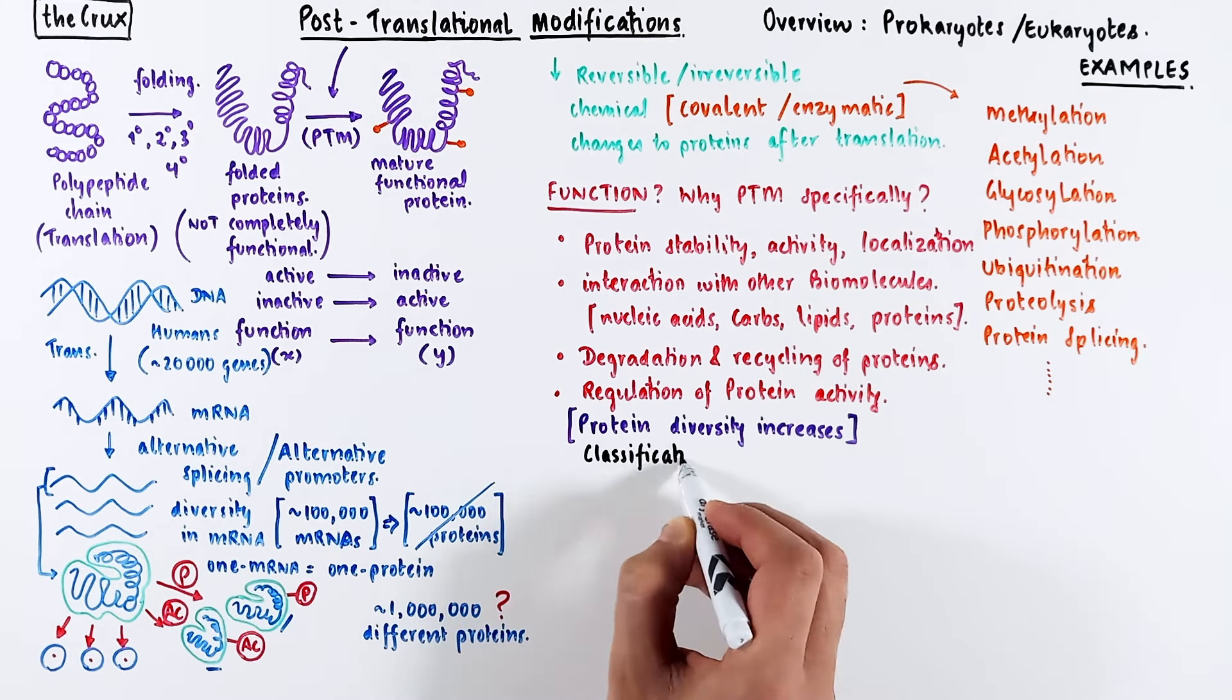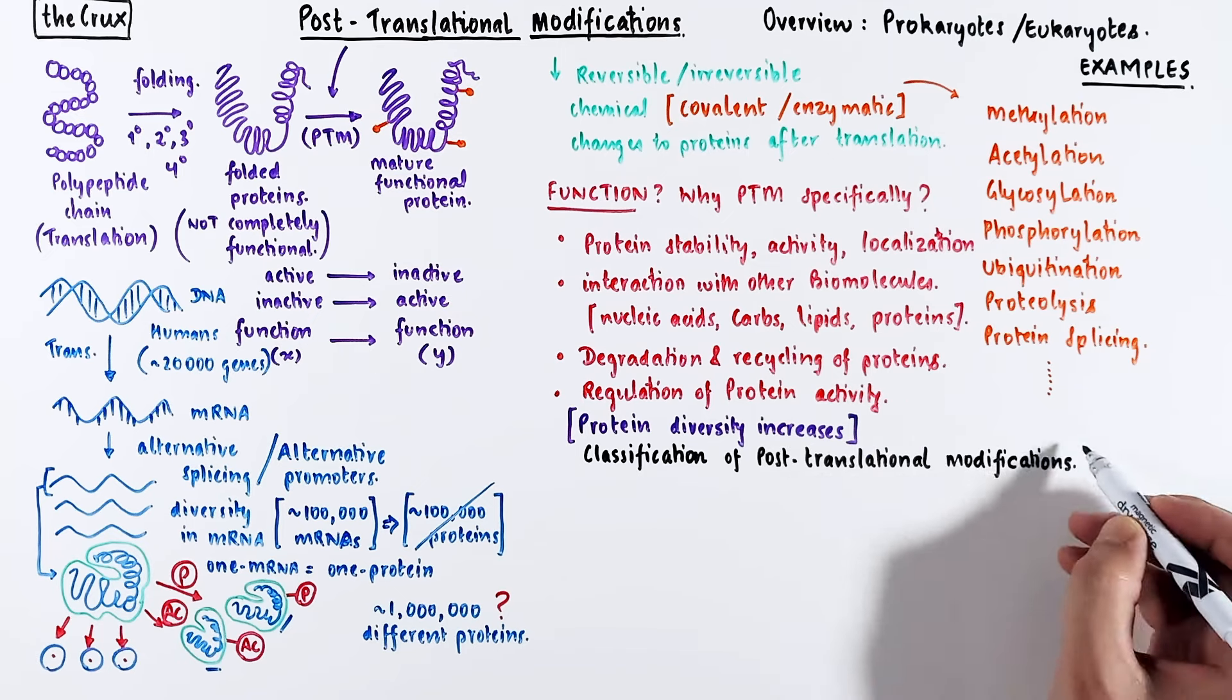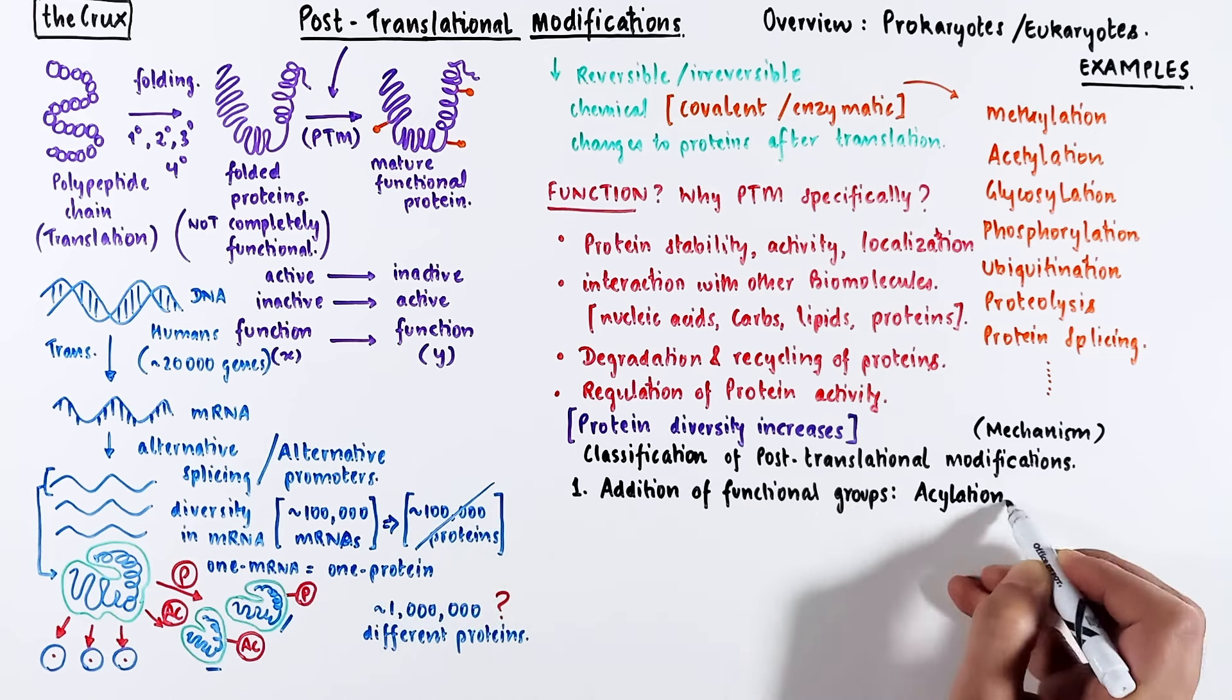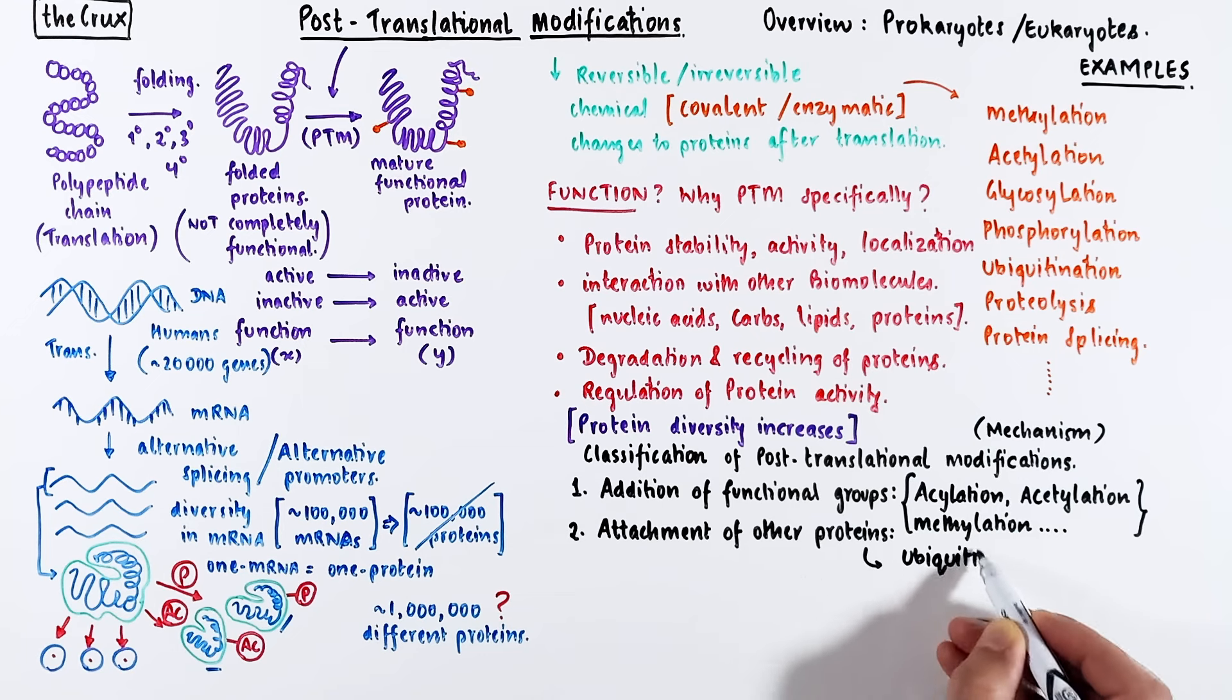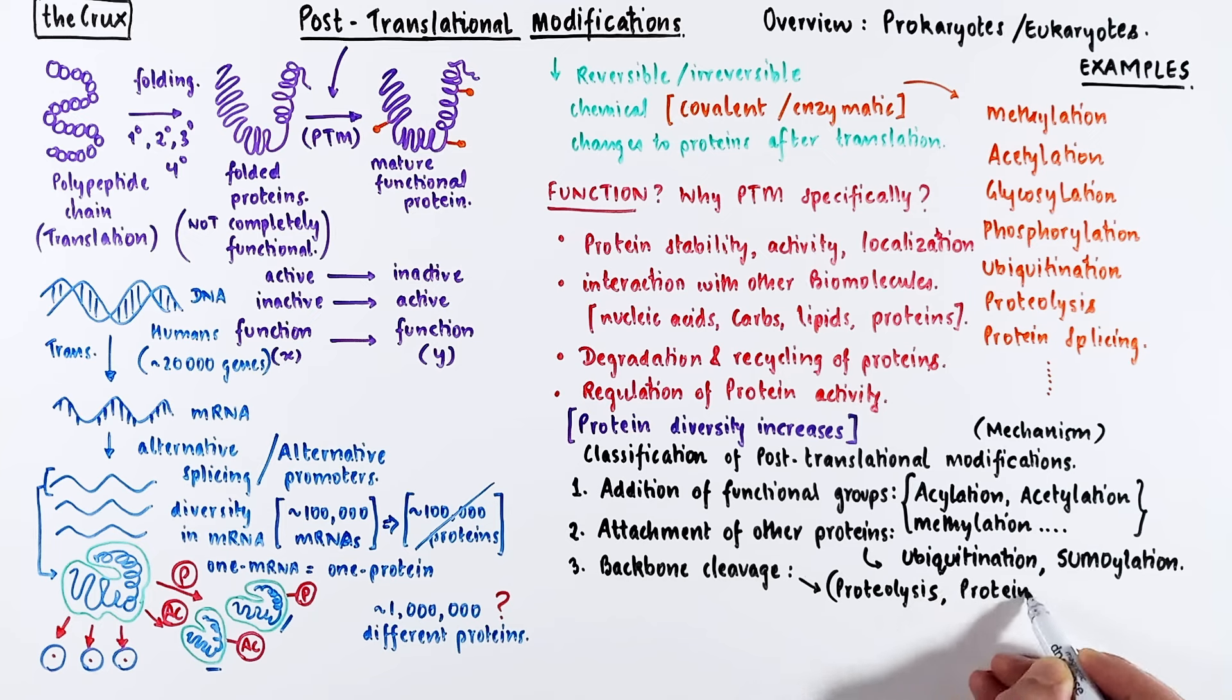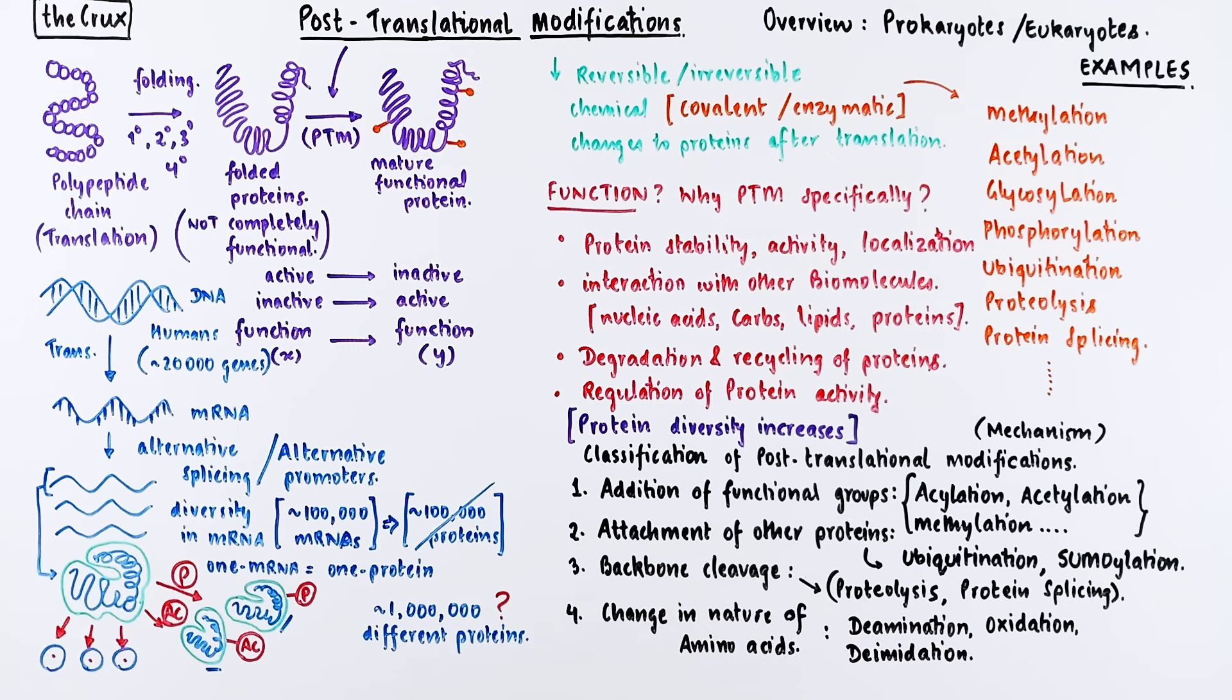These post-translational modifications are usually classified into four major categories depending on mechanism and type. First is the functional group that is added: methylation, acetylation, acylation, phosphorylation, and more. Second is the addition of a protein tag, either ubiquitination or sumoylation. Third, backbone cleavage through proteolysis or protein splicing. Finally, modifications that change the nature of amino acids via oxidation, deamination, and other non-enzymatic chemical modifications.